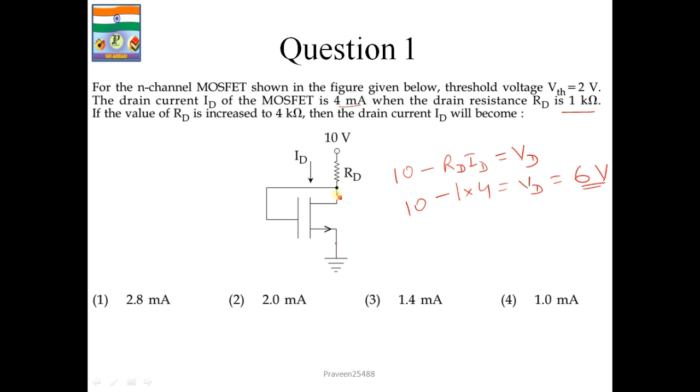For this, RD is 1 and ID is 4 mA. On putting this, 1 into 4, so VD we can get 6 volt. So this is our D terminal, gate, and source. Here you will observe that VDS is equal to 6 volt, which is also equal to VGS. So we know that VDS is greater than or equal to VGS minus VT. And when this condition holds, our MOSFET will come under the category of saturation region. So if it is in saturation, our ID is K into (VGS minus VT) whole square. Using this formula, we can easily calculate our current ID by applying both conditions. So on solving this, we will get 2.8 mA. Option 1 is correct.